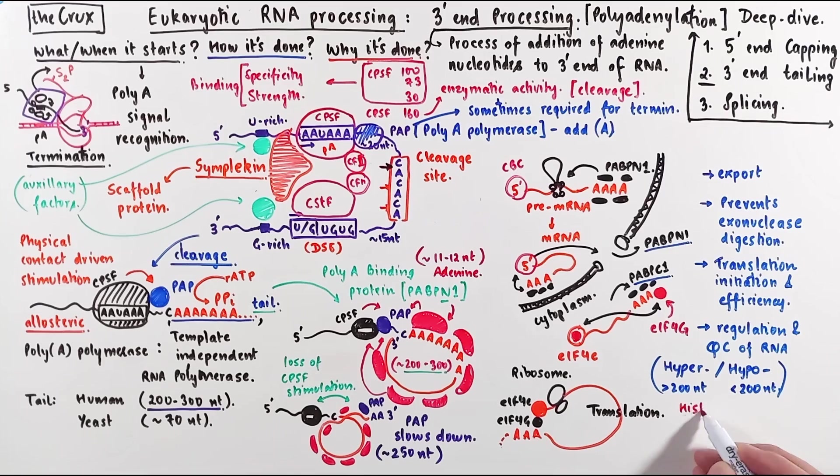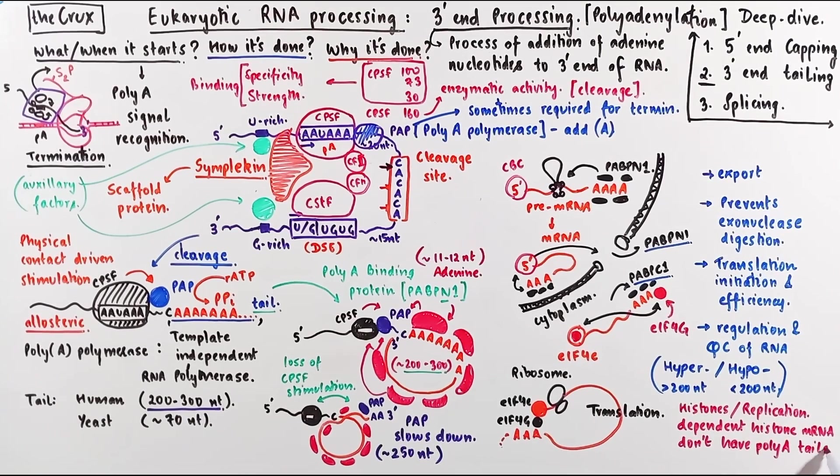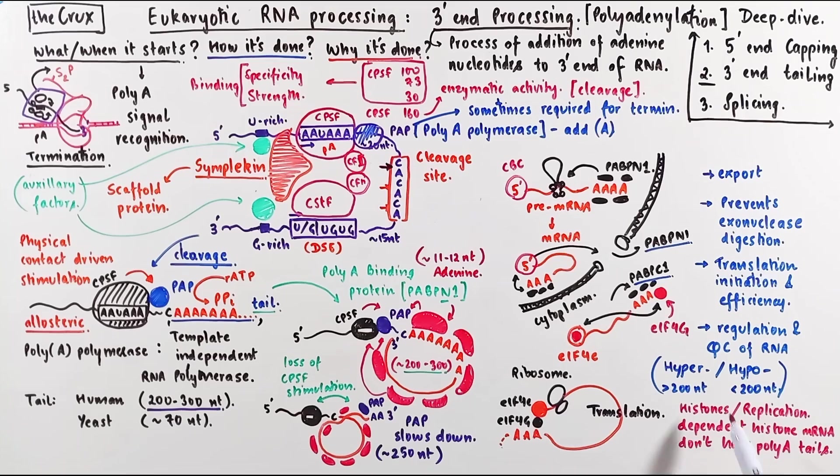Before we wrap up, I will leave you with an interesting fact. The histones or specifically the replication-dependent histone mRNAs don't have polyA tails. They are the only mRNA that don't get tailed and their mechanism for transcription termination is also very different from the conventional transcription termination. And that's all for this deep dive video.